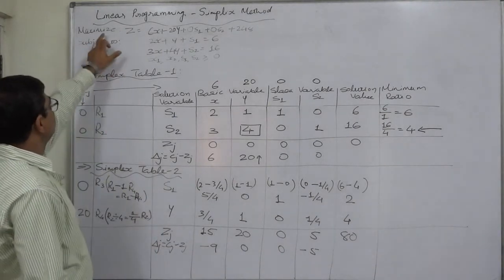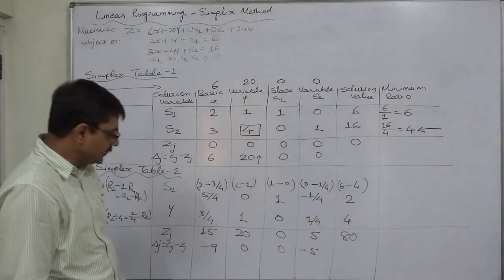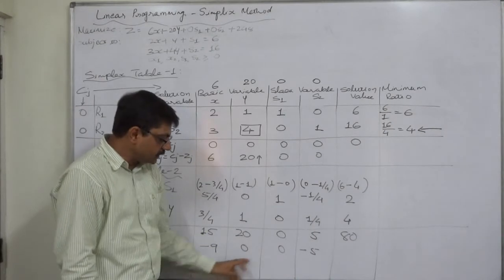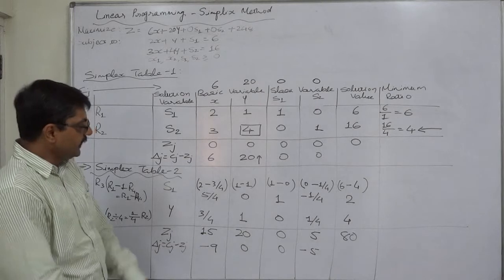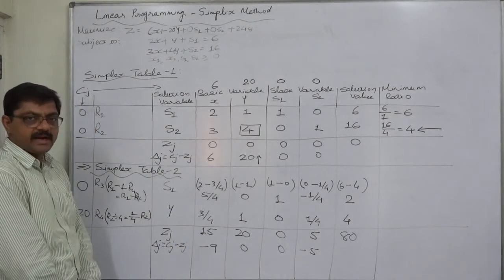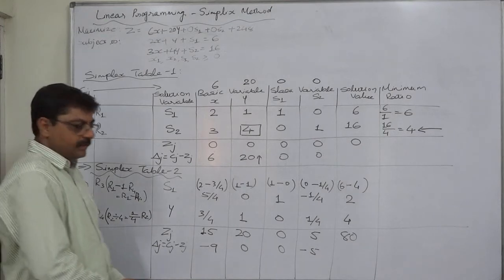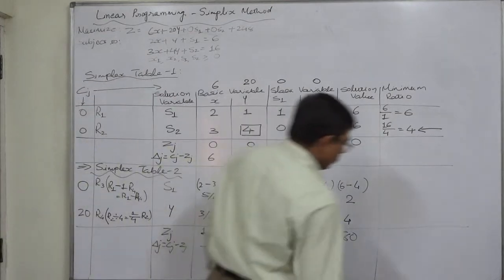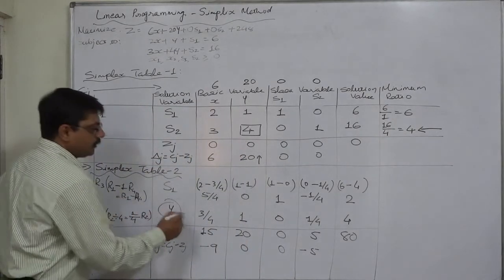All the delta values are 0 or negative. Our objective is maximization. In case of maximization, if all delta values are 0 or negative, then this is the optimal solution. So in simplex table number 2, or at the end of simplex table 2, we have already reached the optimal solution.